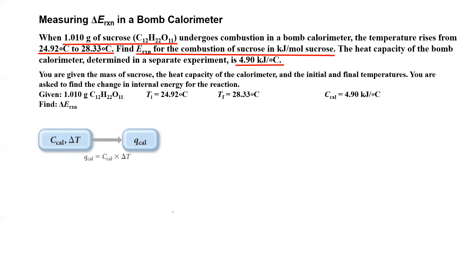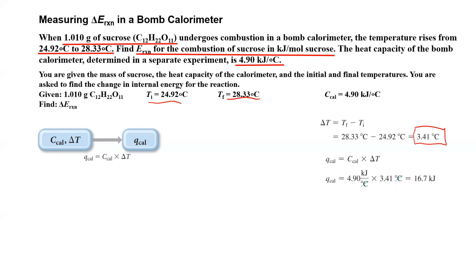So I'm given grams of sucrose, temperature change in the bomb calorimeter, and the heat capacity of the bomb calorimeter to find the energy of the reaction. First, let's figure out the heat of the calorimeter — the heat of the surroundings — using Q equals CΔT. I need the delta T: T final minus T initial gives me a delta T of 3.41 degrees Celsius. Plugging that in, I multiply the heat capacity by the temperature change and I get the heat of the calorimeter, which is 16.7 kilojoules.